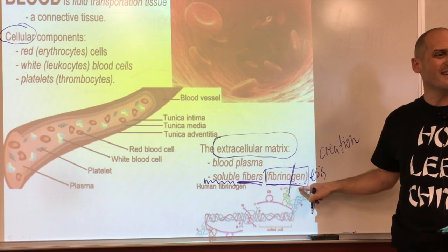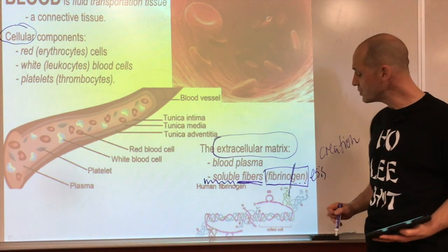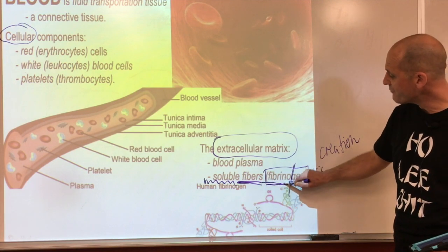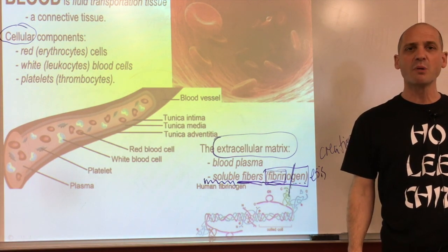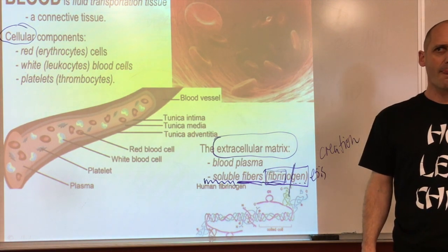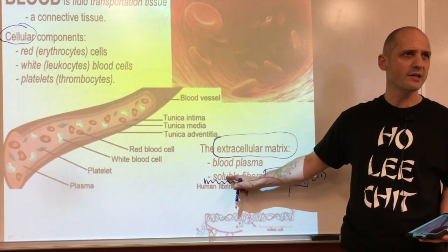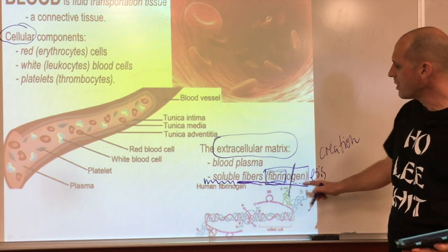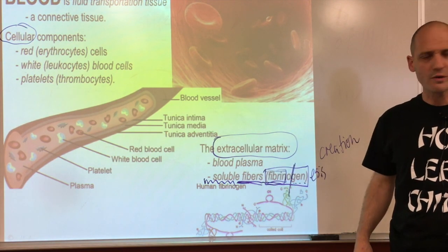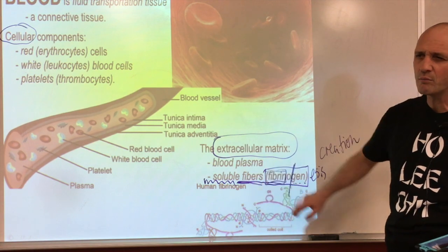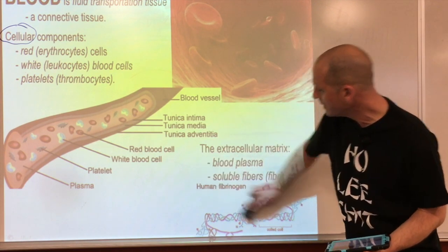Fibrinogen is soluble, and once we make it into fibrin, it's insoluble - it participates out in liquid and makes the blood clumpy. Soluble means it's dissolved like sugar in water; insoluble means it's not dissolved, it sticks out from the water. This is a very delicate situation in the blood.